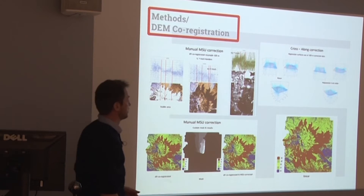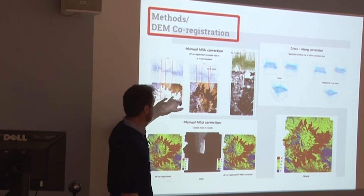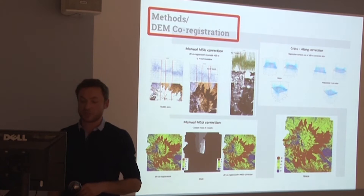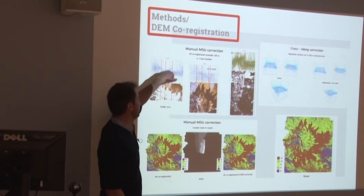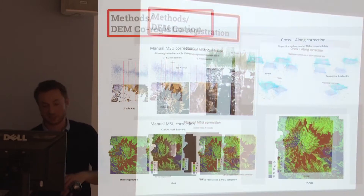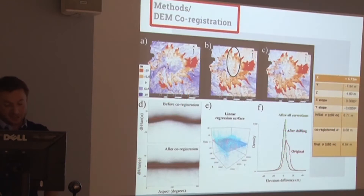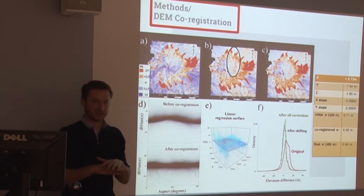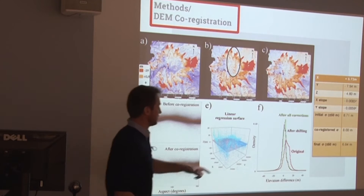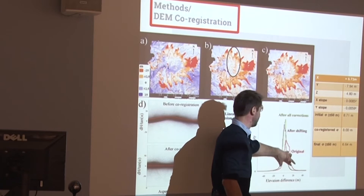There was another problem with the Moscow State University model — a known issue in one part where there were some problems during one of the 1997 flights. Using statistics, we identified those bumps and adjusted that area. We also found that the DEMs were slightly tilted relative to each other, and we applied that correction too. It took some time to figure all this out, but now we're certain they are perfectly aligned.